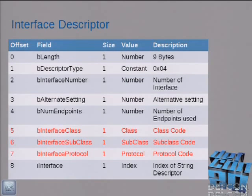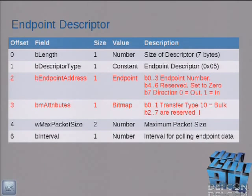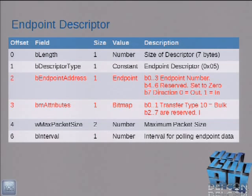Then we get an interface descriptor, and in it we can have the class, subclass, and protocol. If we had zeros in the earlier descriptors, we eventually do have to declare what kind of device this is. Then we describe our endpoints. For a mass storage device you're going to have at least three endpoints: the control endpoint, bulk in, and bulk out. Each endpoint has an address, and the high-order bit tells you the direction. It also has an attribute bit field that tells you things like 'is this a bulk endpoint?' A lot of these bits are reserved — if they're not zero, things tend to crash, so zero out unspecified fields.